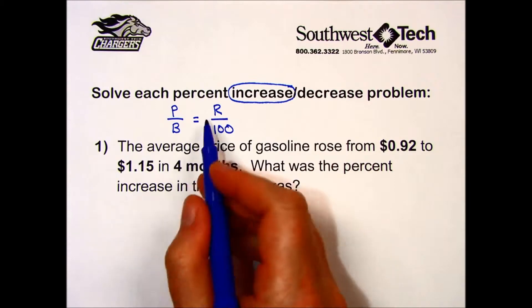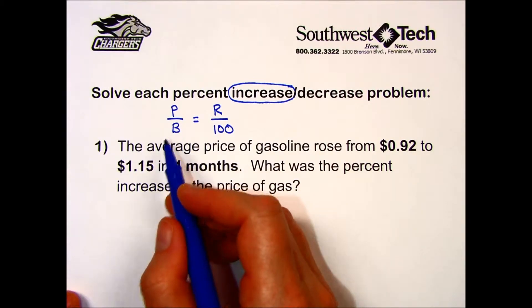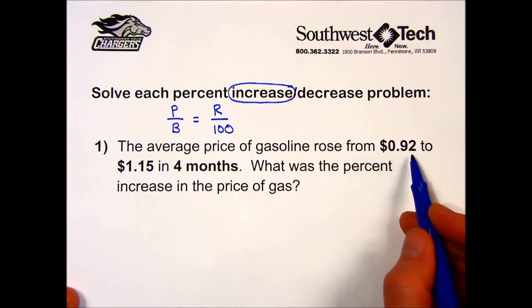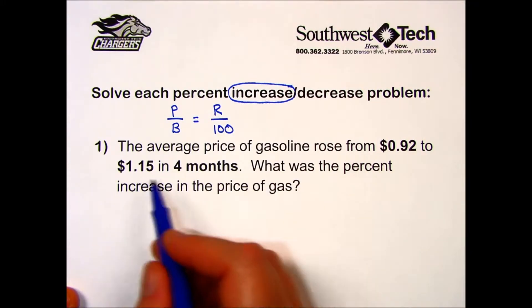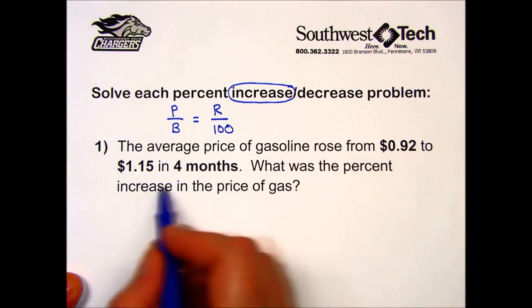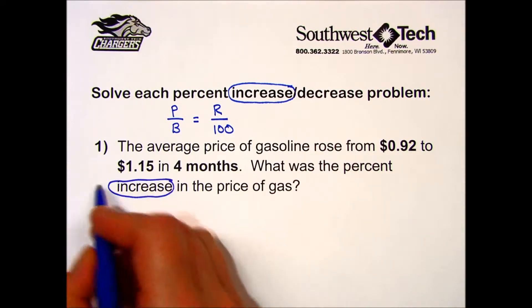Number one: The average price of gasoline rose from 92 cents to $1.15 in four months. What was the percent increase in the price of gas? The percent increase is the rate that I'll be looking for.